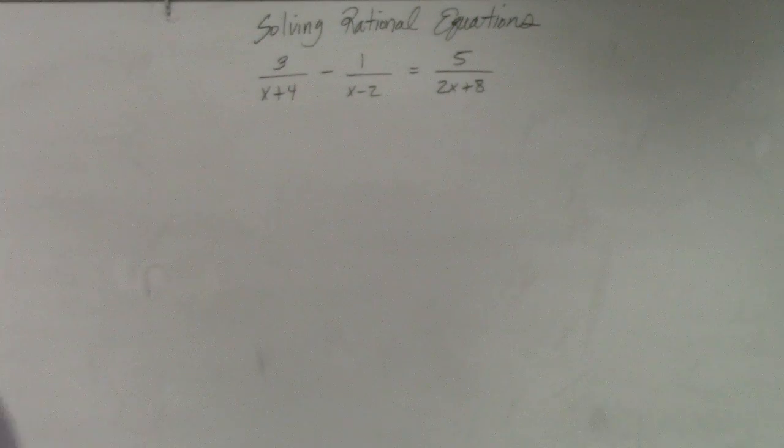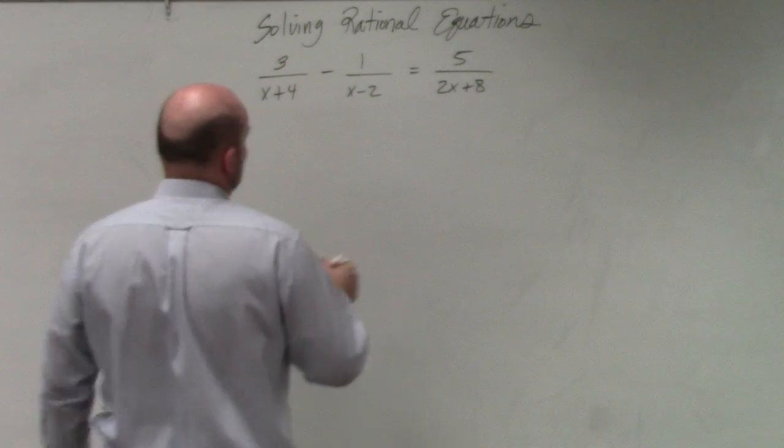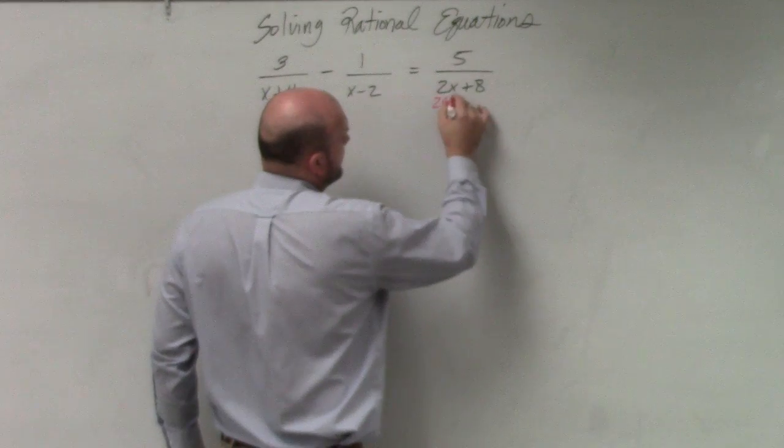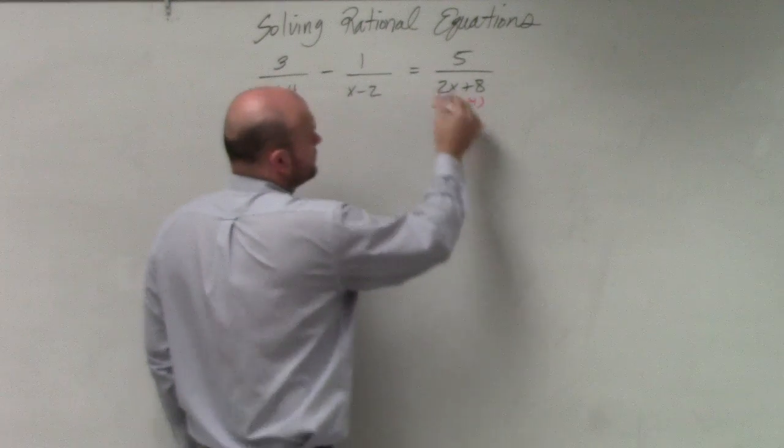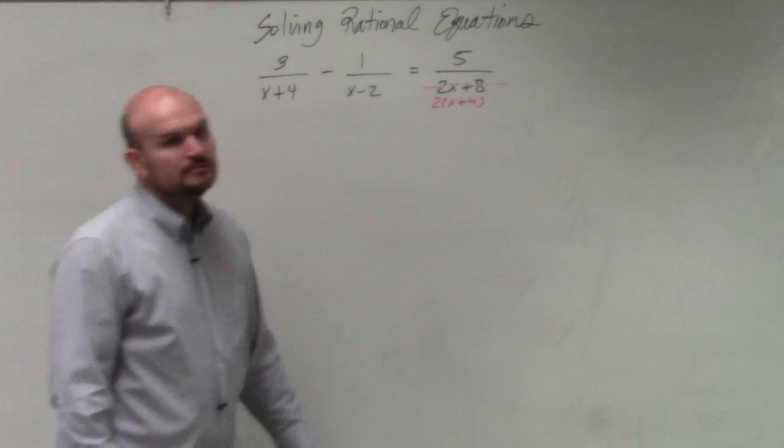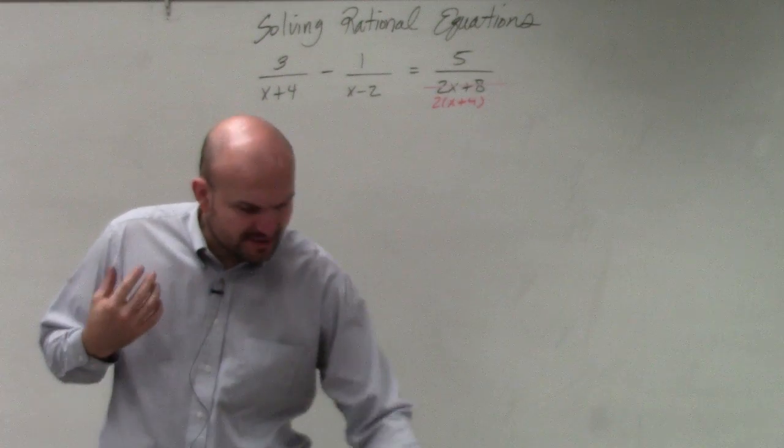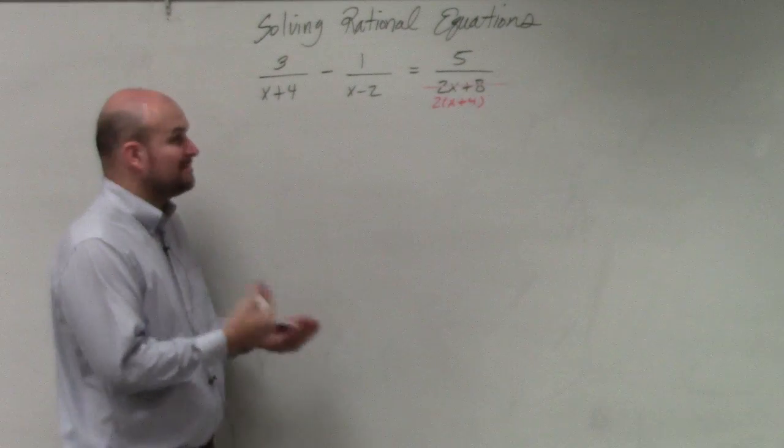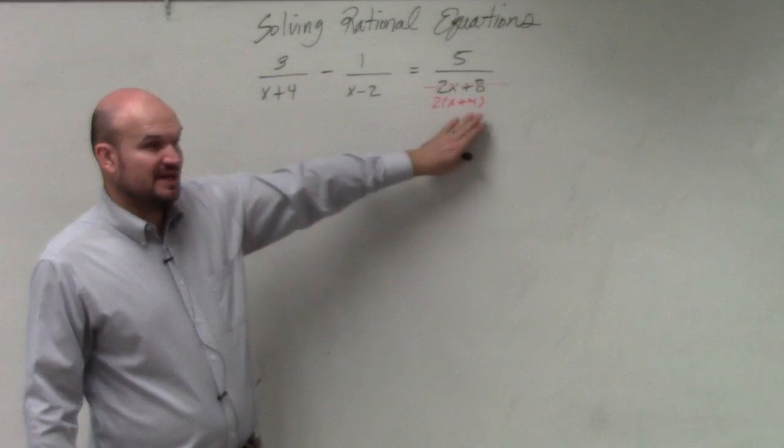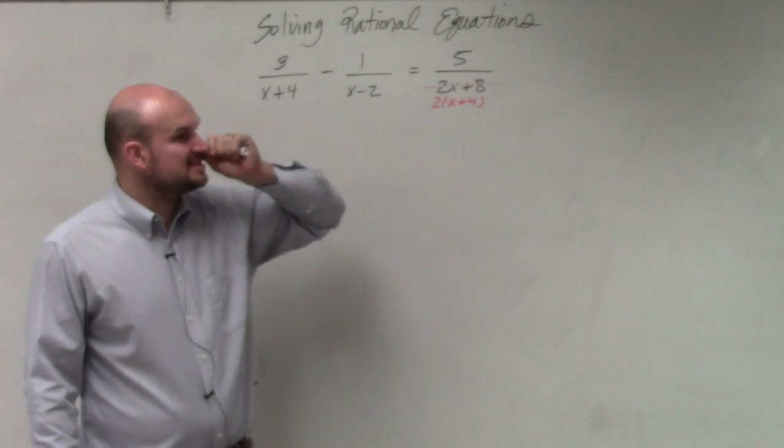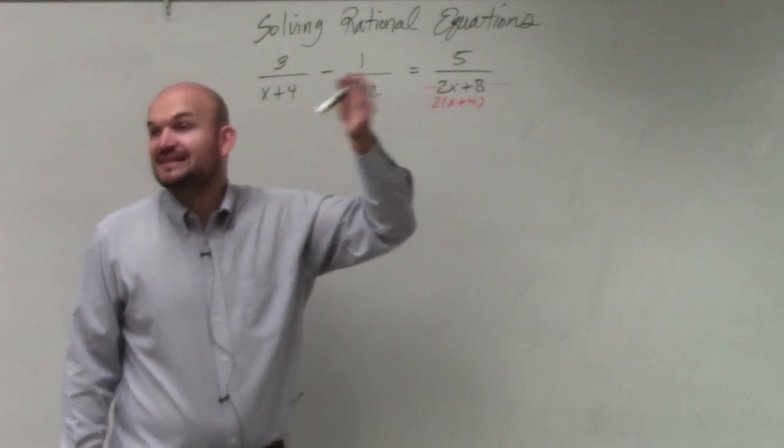So first thing I always want to do is factor out, always factor items out as possible. Now, basically when we're looking at polynomials, I'm looking at, once I've factored everything, I'm looking for everything that is unique.